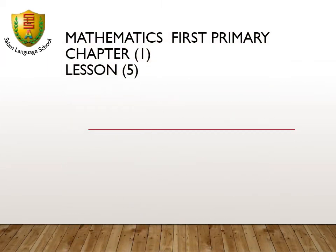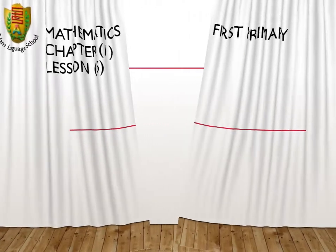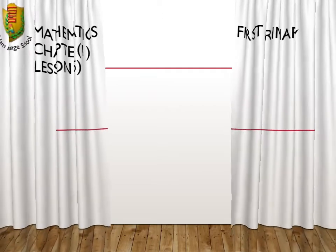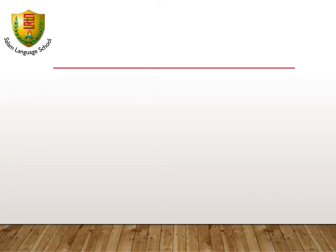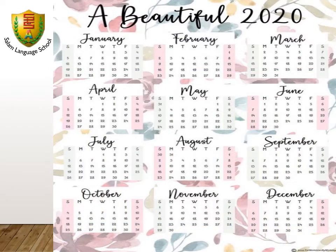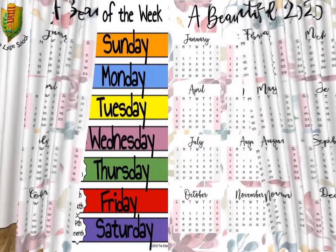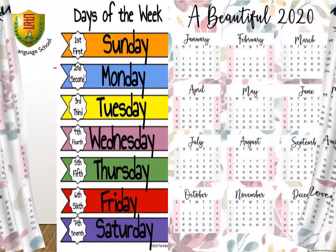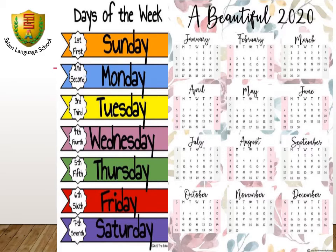Chapter 1, Lesson 5. The calendar helps us to know days, weeks, and months in a year. It also helps us to know special days like birthdays and holidays. We have 7 days in a week, and we have 12 months in a year.